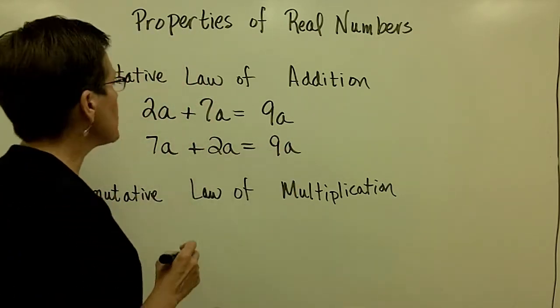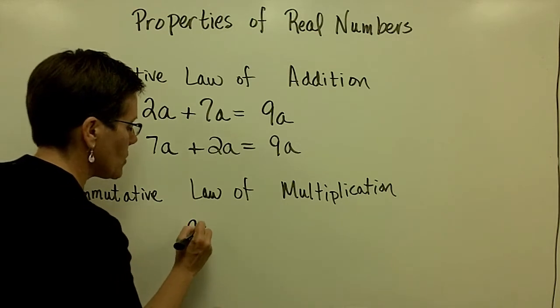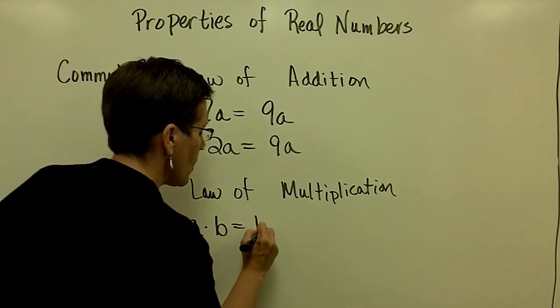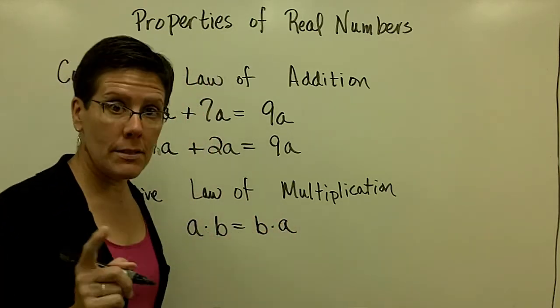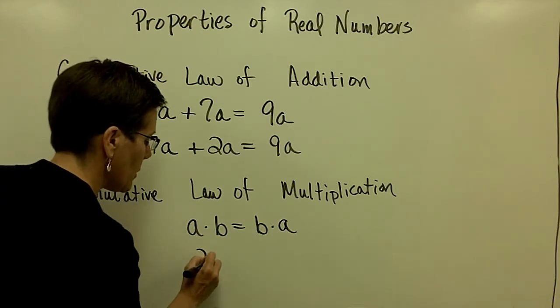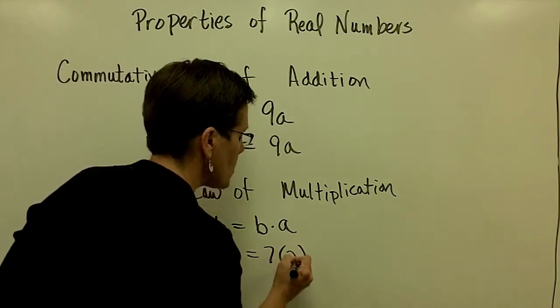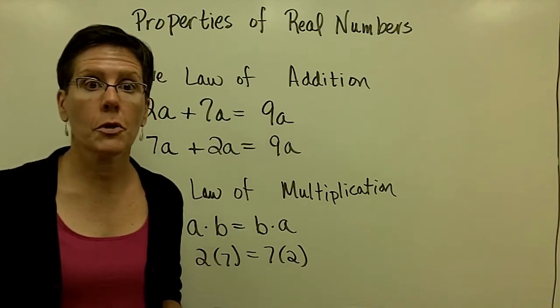The commutative law of multiplication says that I can multiply in any order. So I can take A times B or I can take B times A and I still get the same results. For example, 2 times 7 is the same thing as 7 times 2, both of those equaling 14.